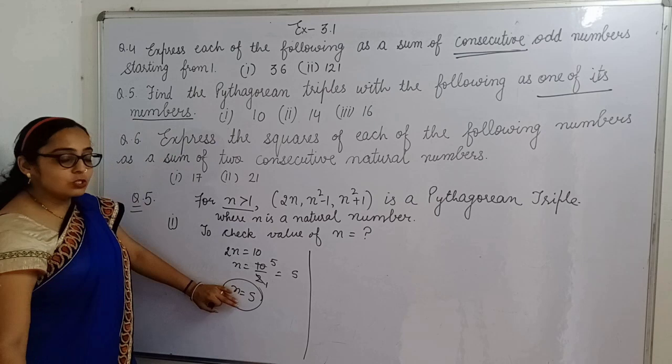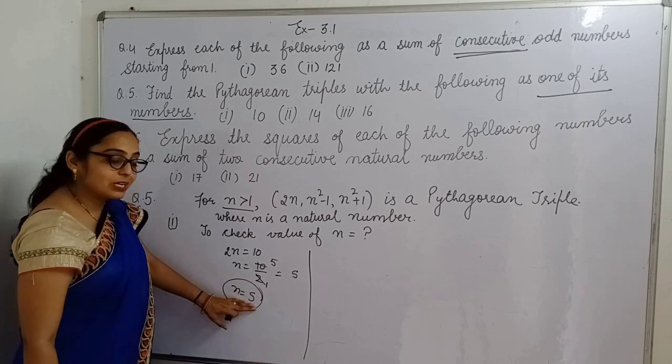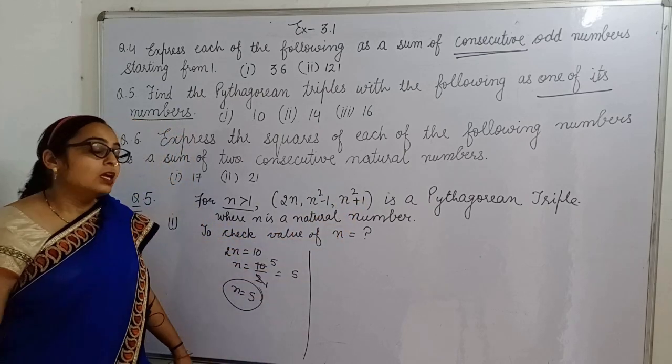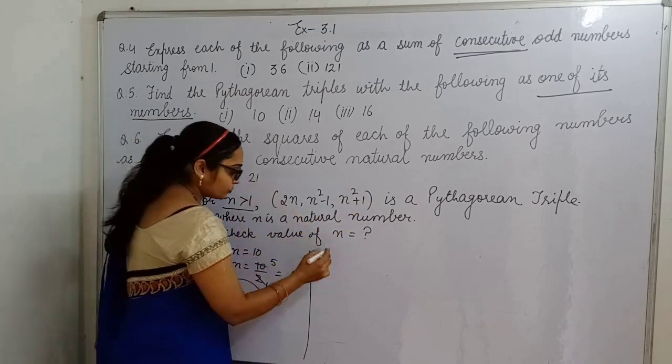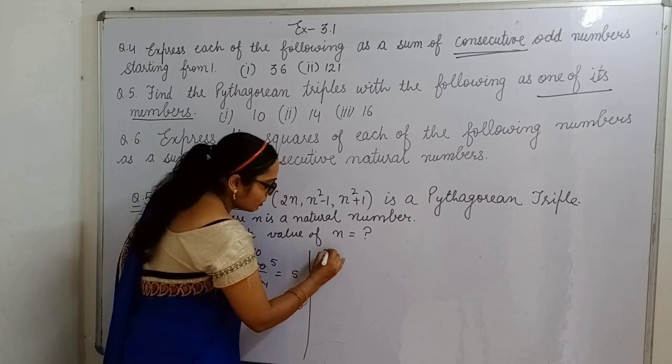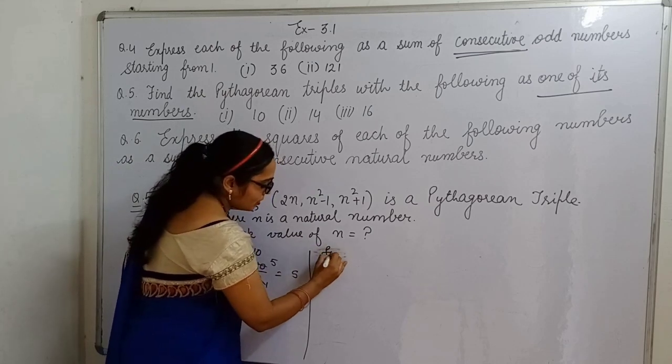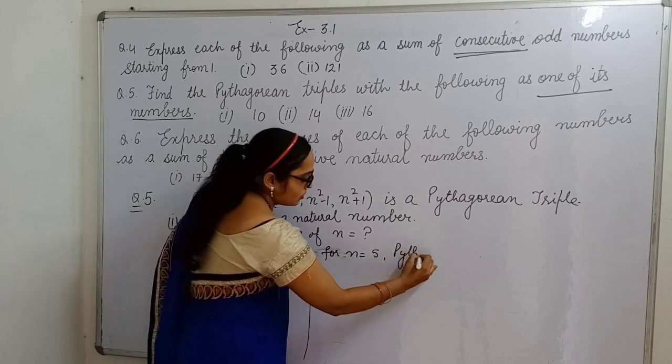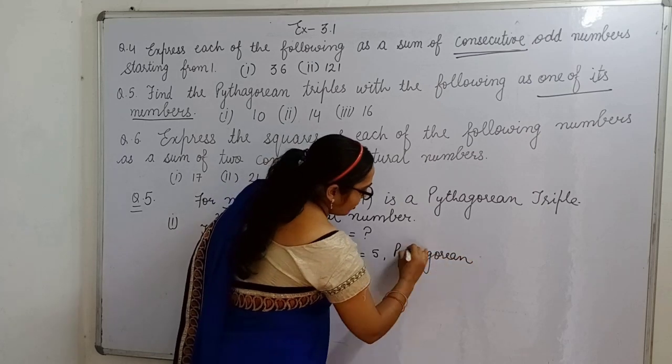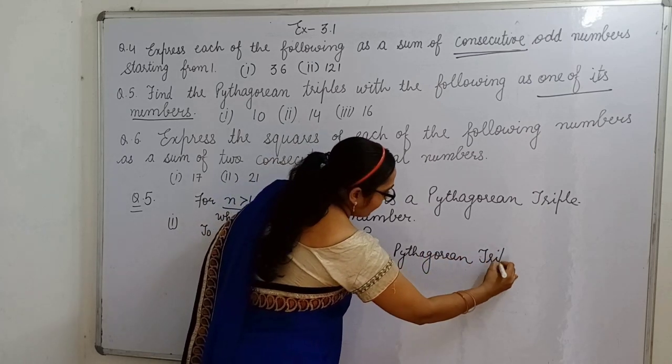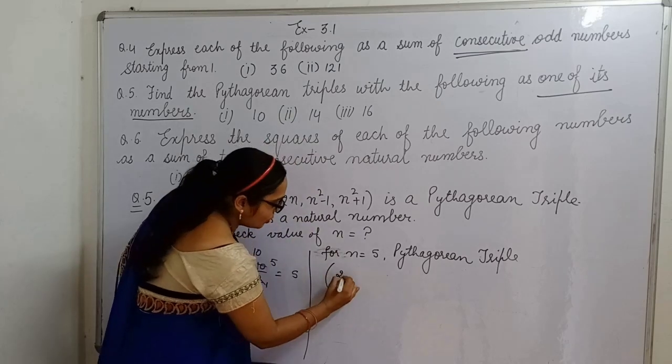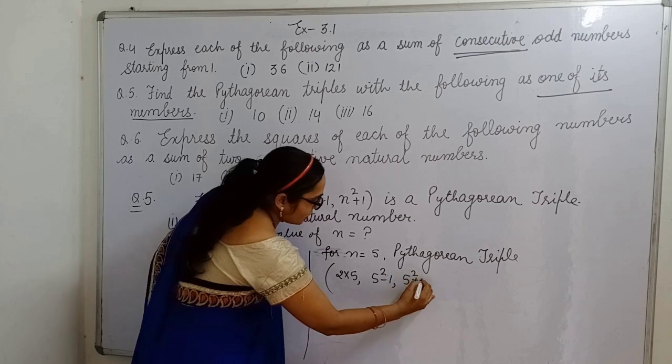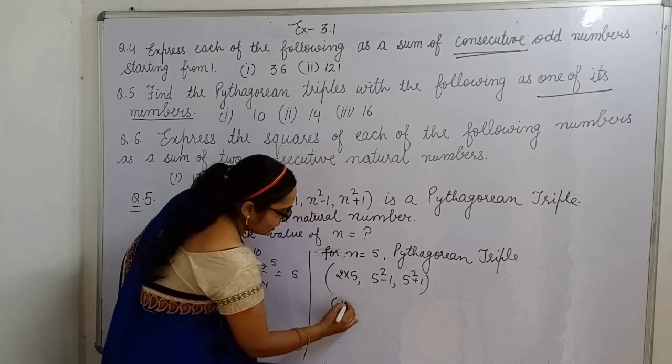If n is not equal to natural number then you have to find out. So for n is equal to 5, Pythagorean triplet is 2 into 5, n equal to 5, 5 square minus 1, 5 square plus 1. So it is 10 and it is 5 square, 5 multiply 5, 5 multiply 5 plus 1.